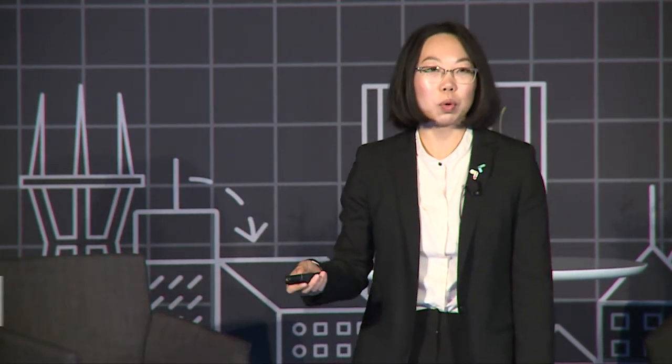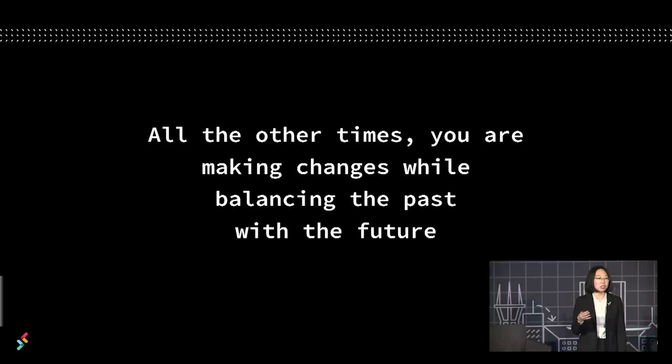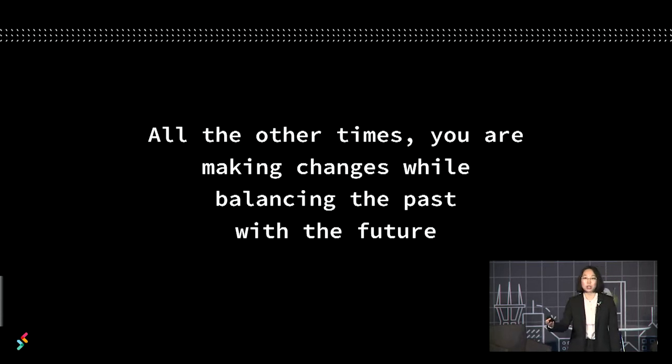Most of the time, we are actually balancing making changes while balancing the decisions we've made in the past with where we want to go in the future. And this is really where a lot of the API design challenges come up. It's reconciling the decisions we made a long time ago for a different context and a different problem, and making sure that they still work with all the new problems we're encountering and all the new things we want our users to be able to do.